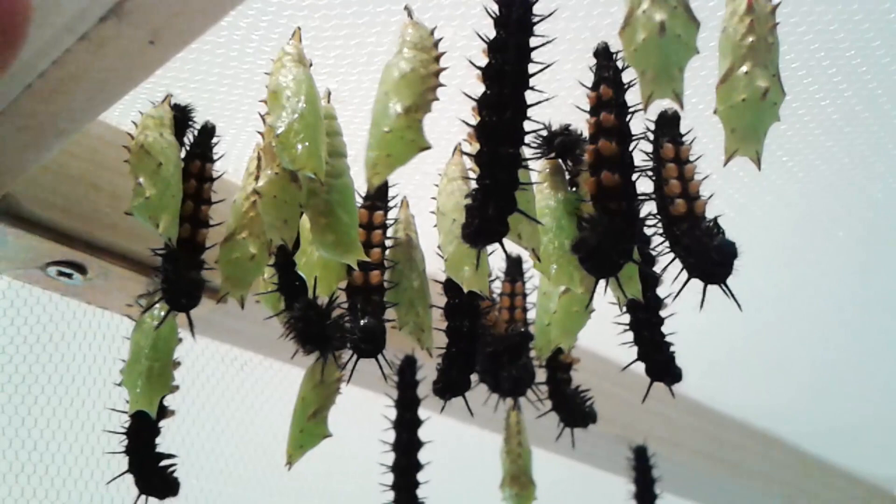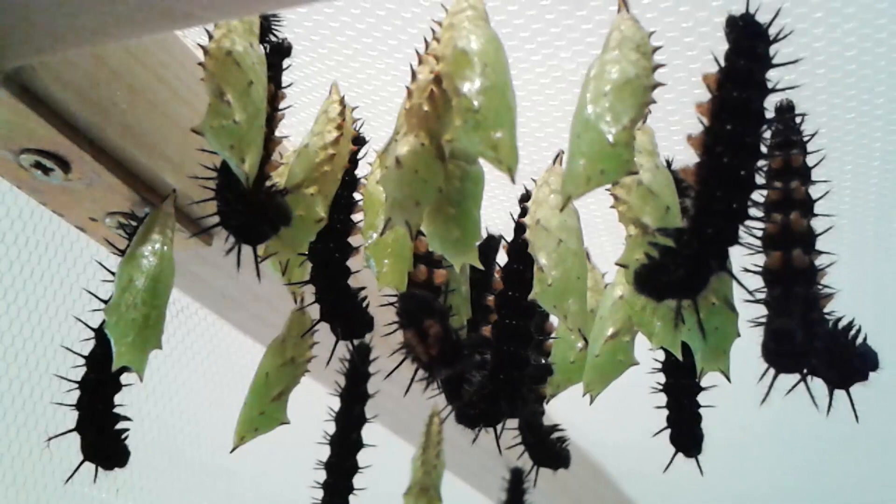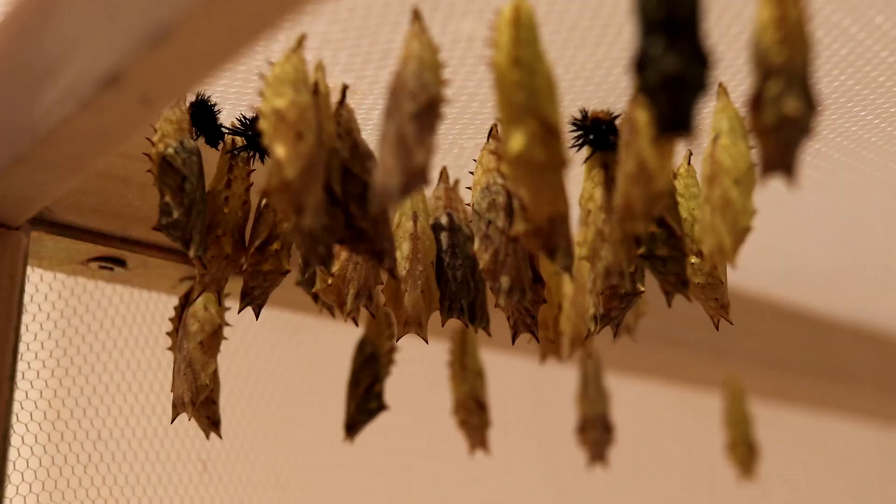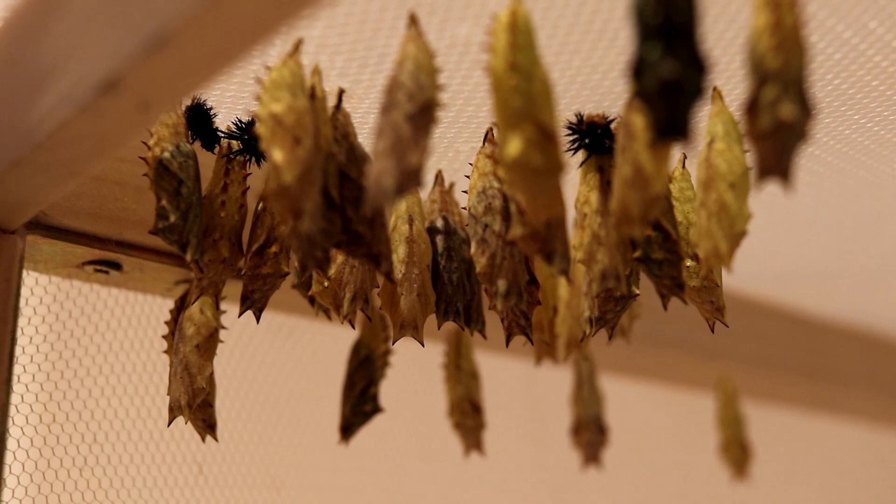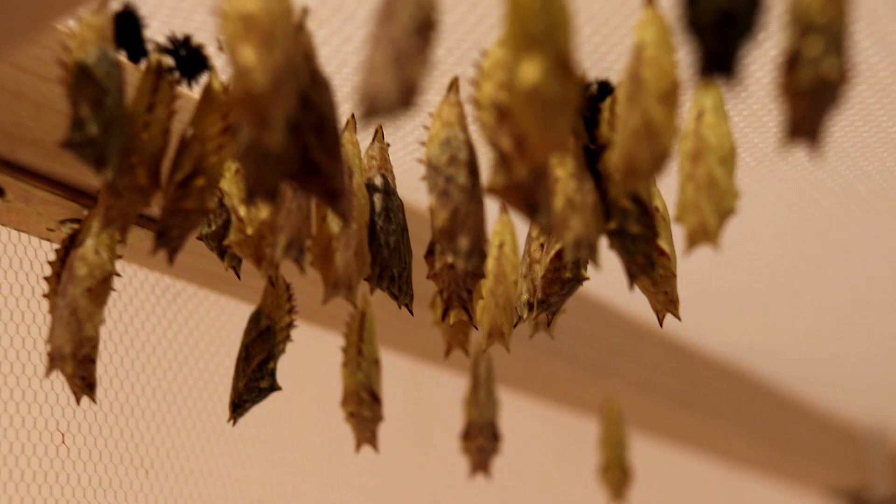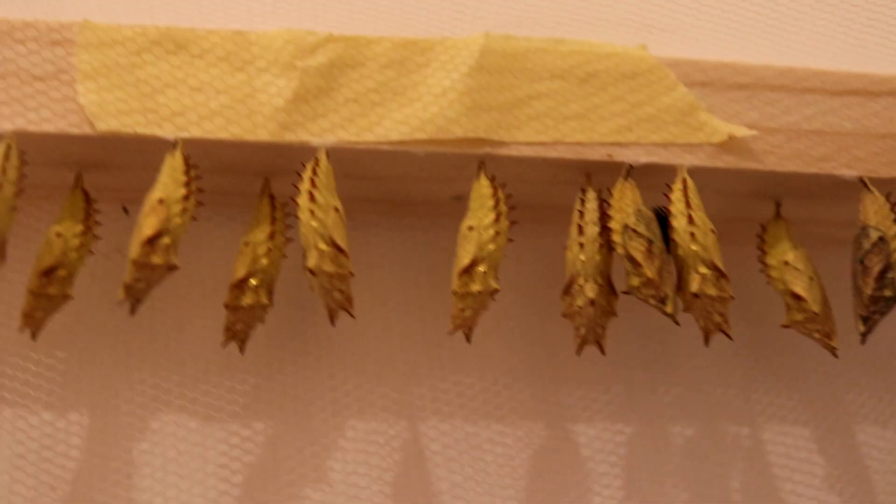Yet after a few days, we could see that the color of them changed, and this is a sign that metamorphosis is now happening. A butterfly is now forming inside these pupae. Here you can see them all connected to the wooden bar which was part of the cage.